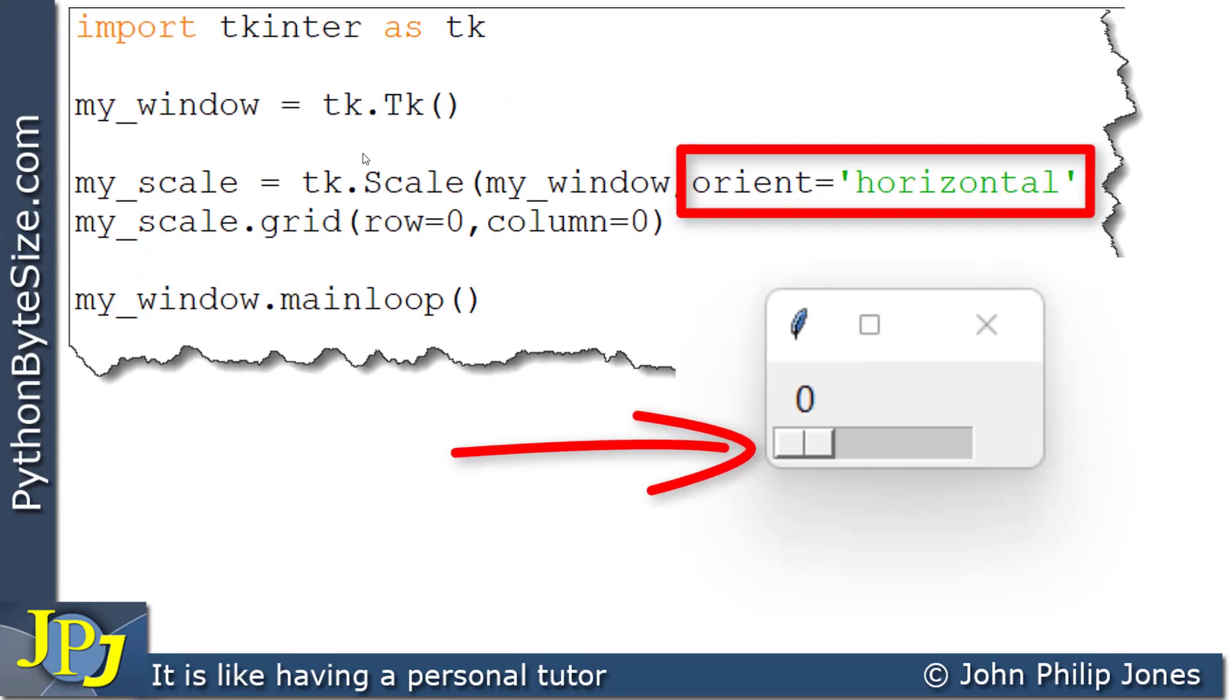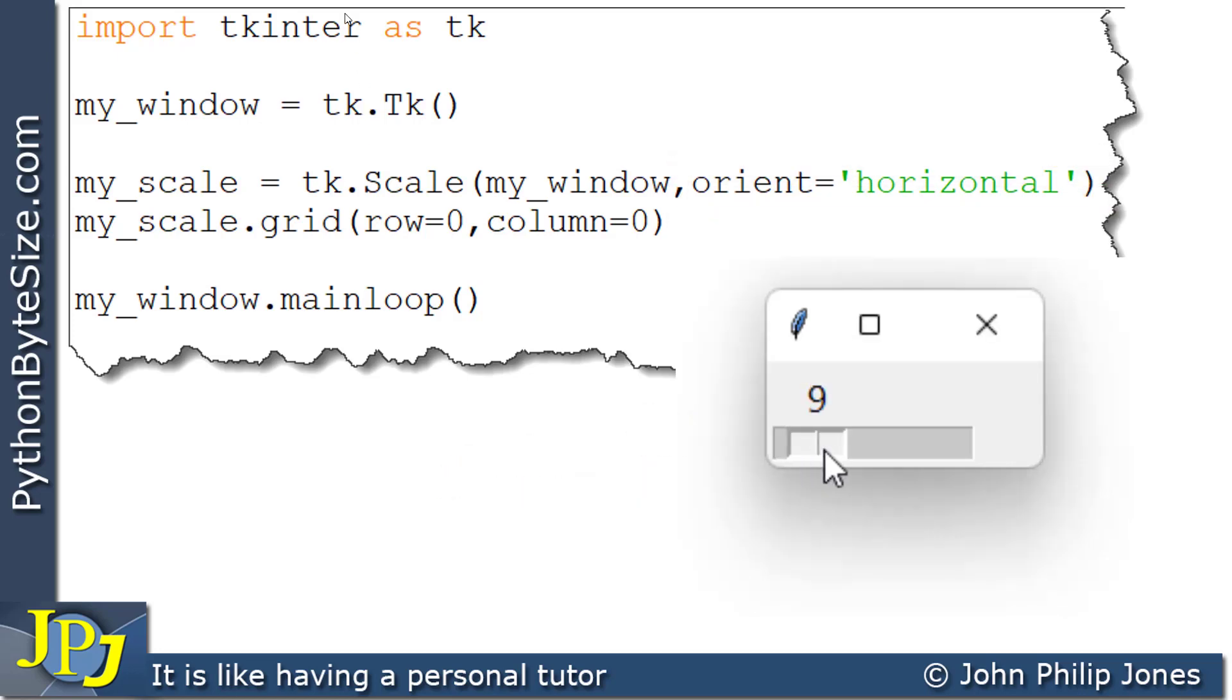For this horizontal scale, you can see the slider is here, and I can move that, and you can see the value above is changing. And I can move it from the 0 all the way up to the 100, and I can leave it at any position within the scale.